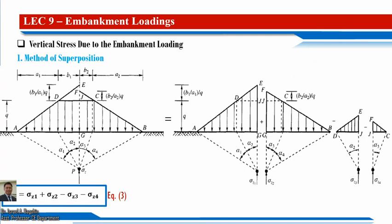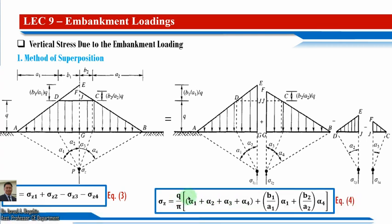Aside from equation 3, we can also use equation 4 as a function of alpha1, alpha2, alpha3, alpha4, where b1 refers to the width of the embankment and a1 is the corresponding horizontal distance. For b2 and a2, similar geometric definitions apply. Either equation 3 or equation 4 may be used to calculate vertical stress.